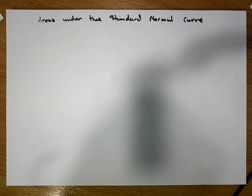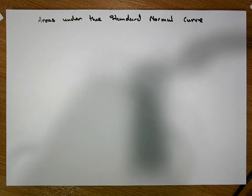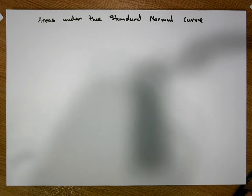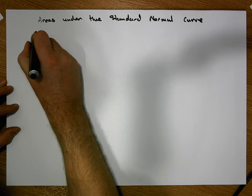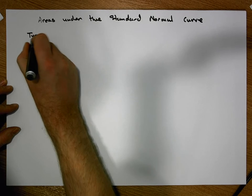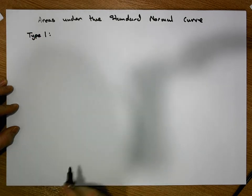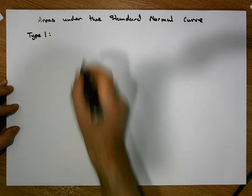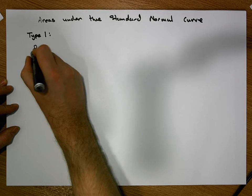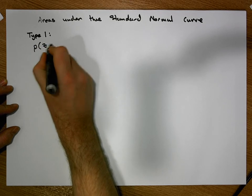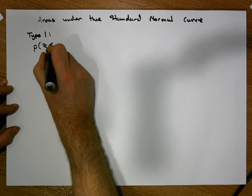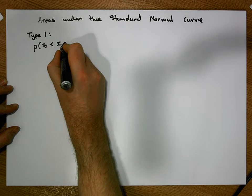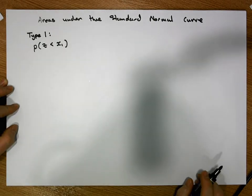So let's have a look at the type 1 areas. Type 1, type 2, and type 3 will deal with positive bounds with respect to the z variable. Type 1 areas are going to be things like where we calculate the probability of observing a z score that's less than a particular positive value.